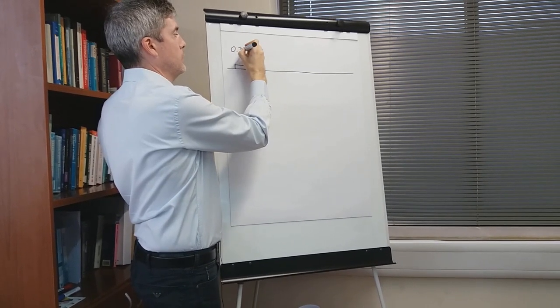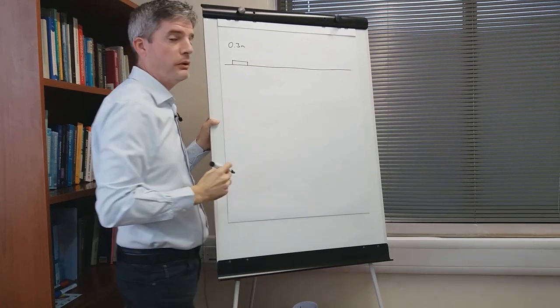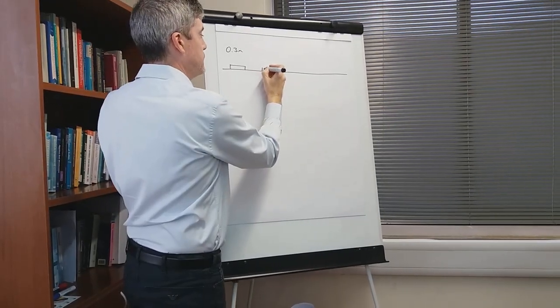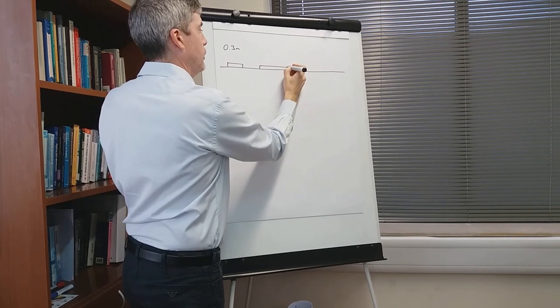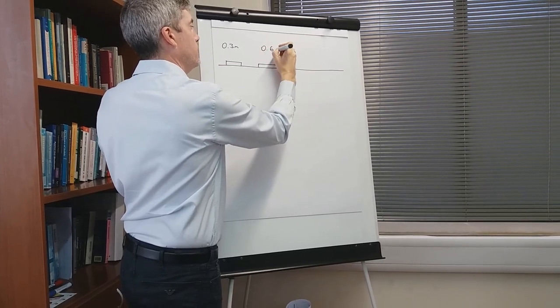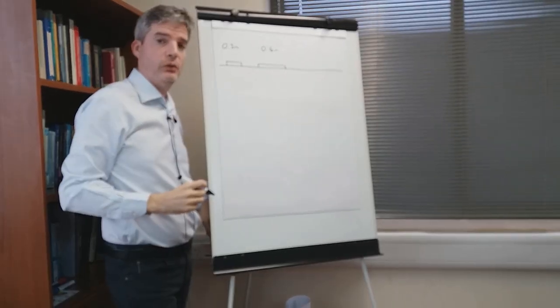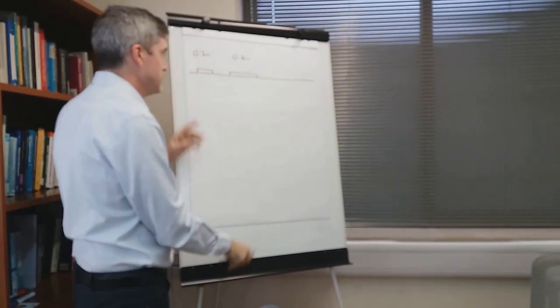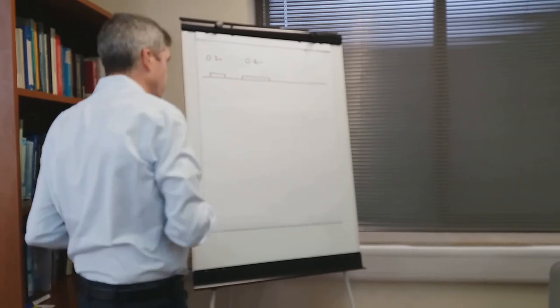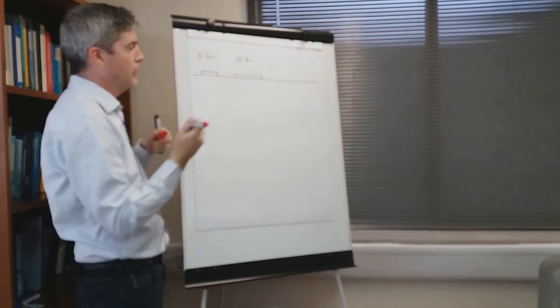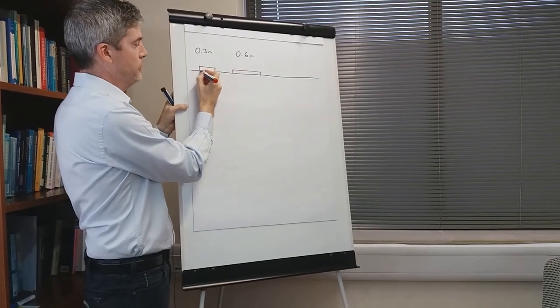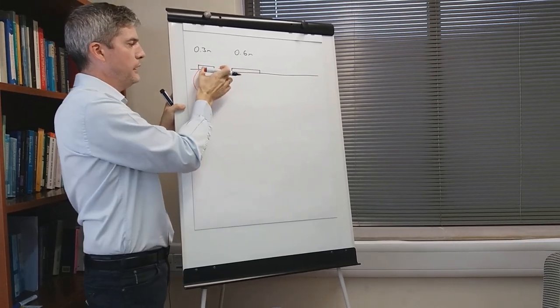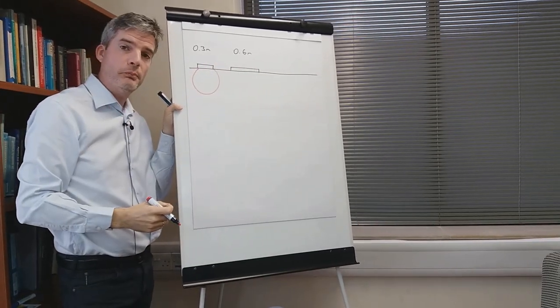The plates start off at about 0.3 meters or one foot diameter, but you can get bigger plates. Another common one is 0.6 meter diameter or two foot. Now what difference does it make, the size of the plate? Well the depth of influence or the bulb of pressure is directly related to the diameter of the plate.